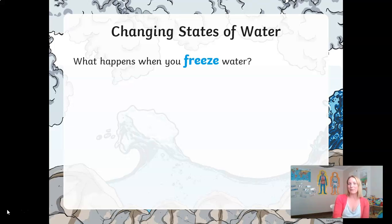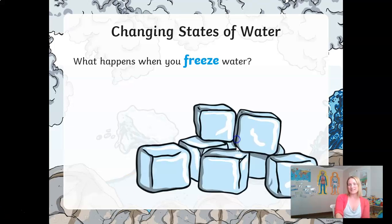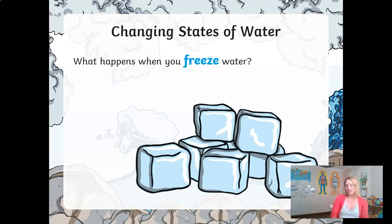So what happens to water when you freeze it? Nice and simple — you get ice. So what is ice? Ice is a solid, and hopefully you can all remember that the temperature at which water freezes — but not all liquids freeze — is zero degrees Celsius. So that is freezing: when you're turning a liquid into a solid by cooling it.